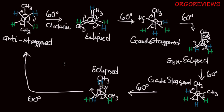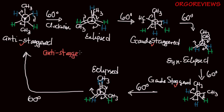The question is: which conformation is more stable? We arrange them in terms of stability. The staggered conformations are more stable — we have three staggered conformations that are more stable than any eclipsed conformation. Among the staggered conformations, the anti-staggered is more stable than the gauche staggered because the larger groups are on opposite sides. Both gauche staggered conformations have the same energy.